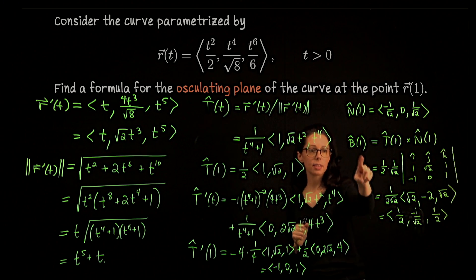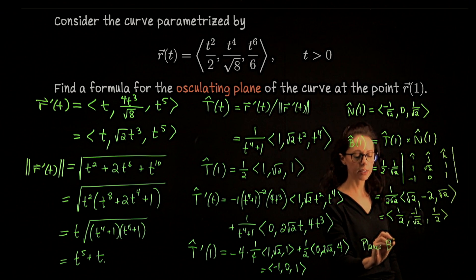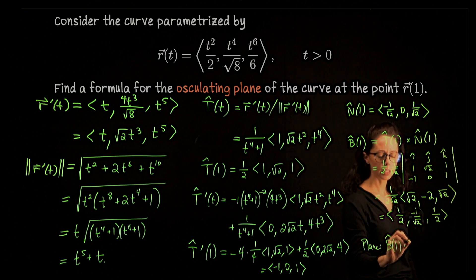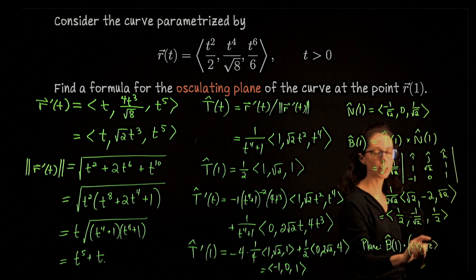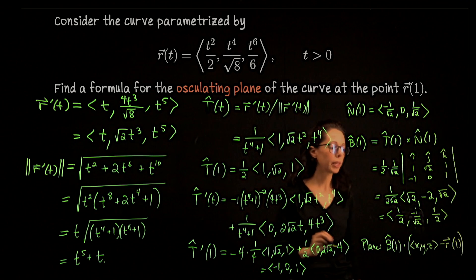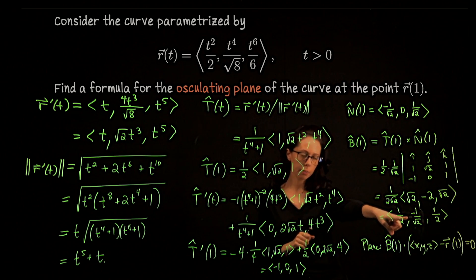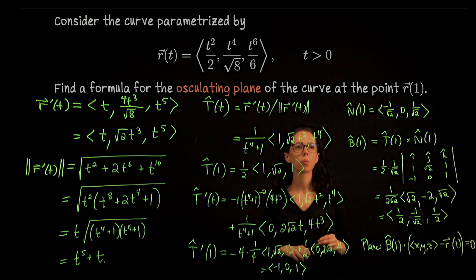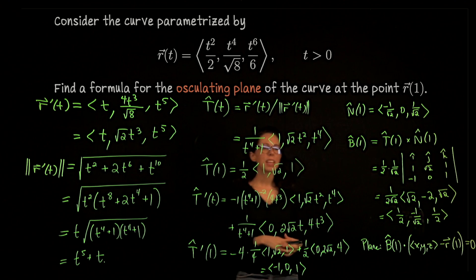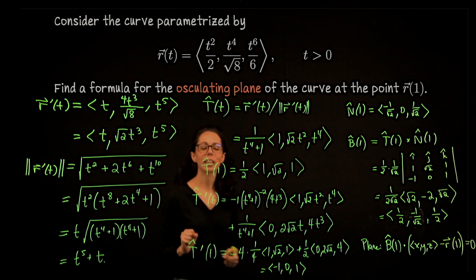We now have all the pieces. The osculating plane has B̂(1) as its normal vector, so the equation is B̂(1) · (⟨x, y, z⟩ − r(1)) = 0, where r(1) = (1/2, 1/√8, 1/6). That completes the computation: we found the velocity vector, speed, unit tangent, unit normal, unit binormal, and used B̂ to state the osculating plane equation.